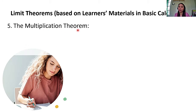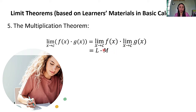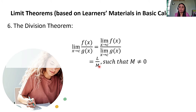Next, we have the multiplication theorem. The limit of F of X times G of X as X approaches C is equal to the limit of F of X as X approaches C times the limit of G of X as X approaches C — equal to L times M. We also have the division theorem: the limit of F of X over G of X as X approaches C equals the limit of F of X over the limit of G of X, which equals L over M, such that M is not equal to 0. The denominator cannot be 0 as that would make the function undefined.